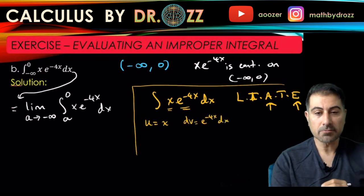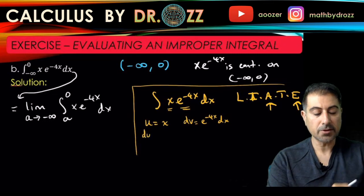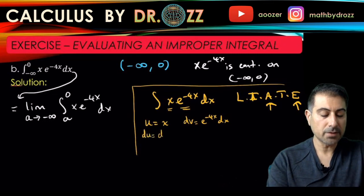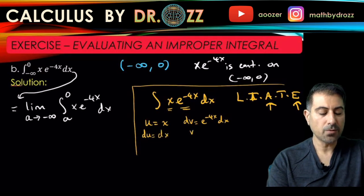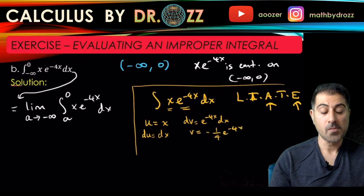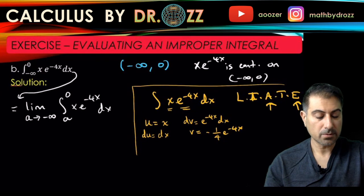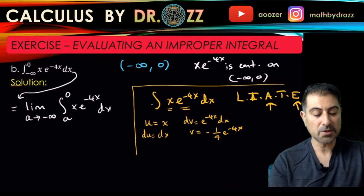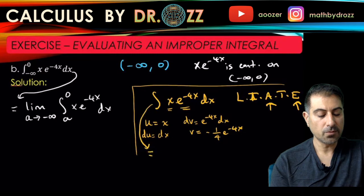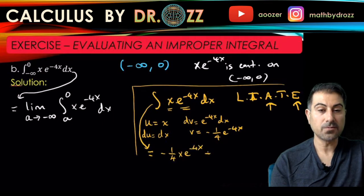For integration by parts, once we set u = x, we get du = dx. The antiderivative of dv = e^(−4x) dx gives v = −(1/4)e^(−4x). So the integral equals u·v minus the integral of v·du, which is −(1/4)·x·e^(−4x) plus (1/4)·∫e^(−4x) dx.